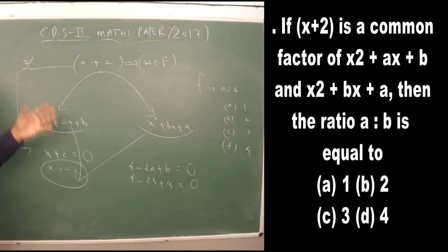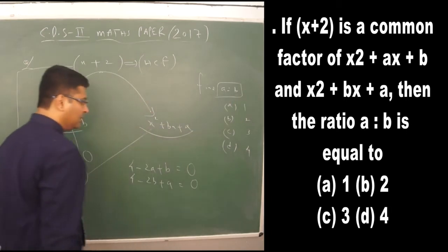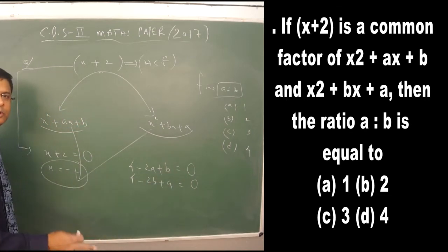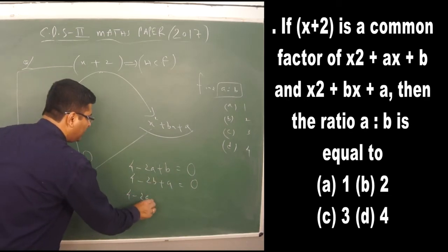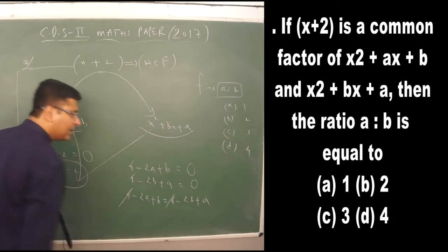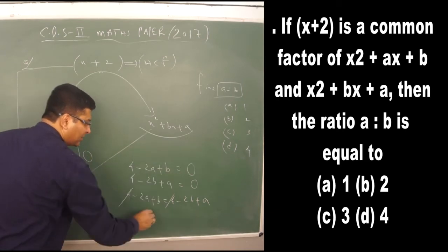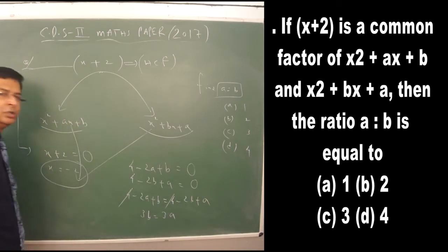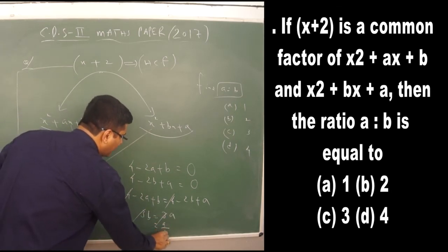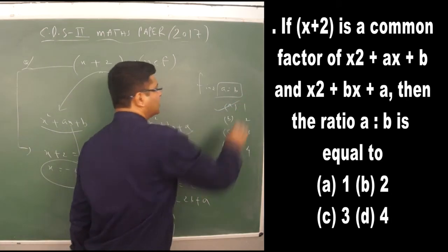To find the ratio a : b, we equate both expressions since both equal zero. The 4s cancel, and rearranging gives 3b = 3a. Cancelling 3 from both sides, we get a/b = 1. The correct answer is option 1.